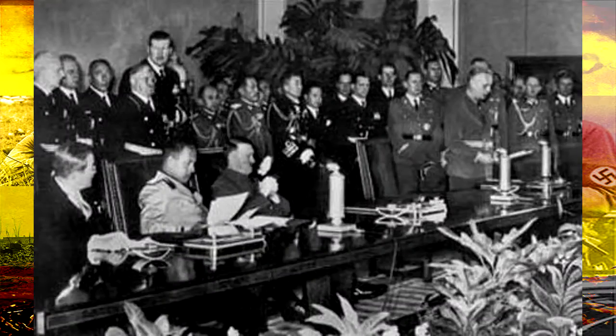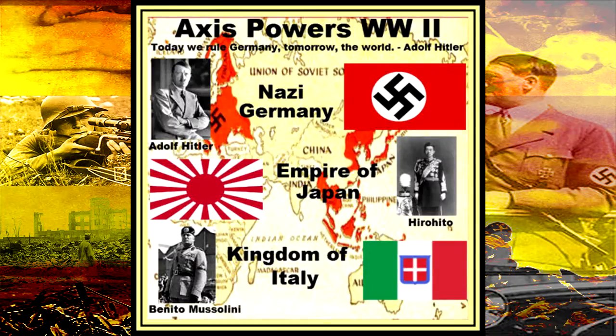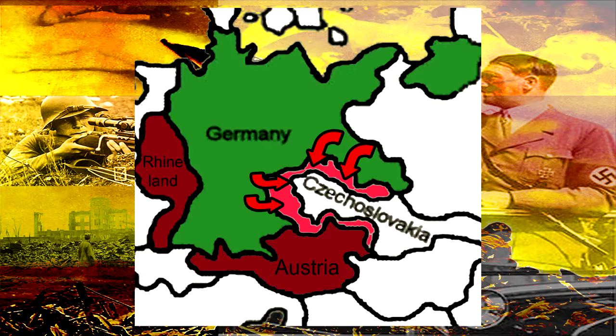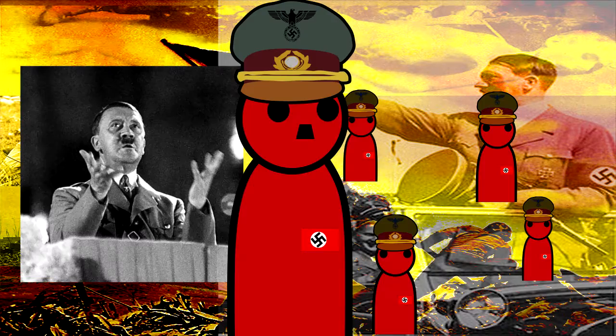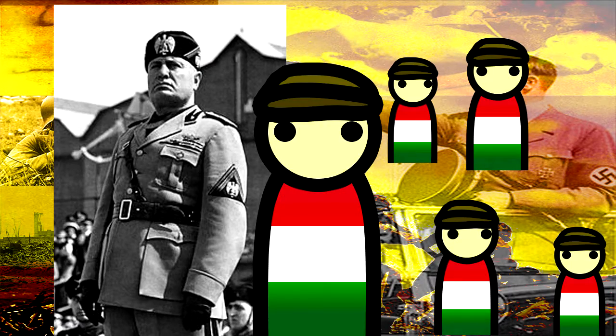The Axis were formed by Germany, Italy, and Japan — at that time, Nazi Germany, Mussolini's Italy, and Hirohito's Japan.